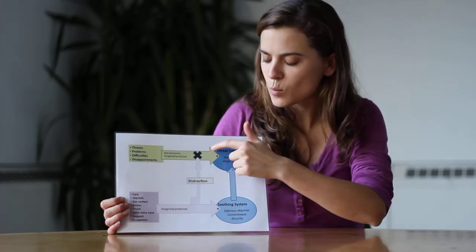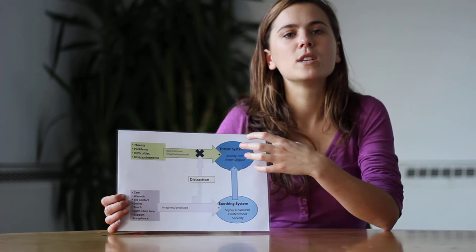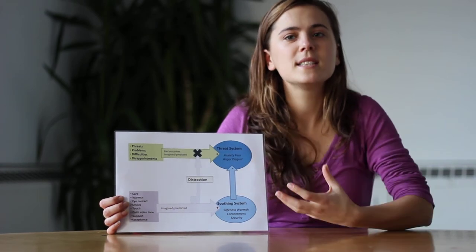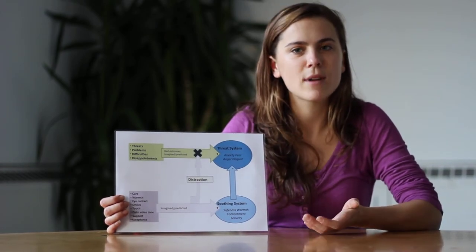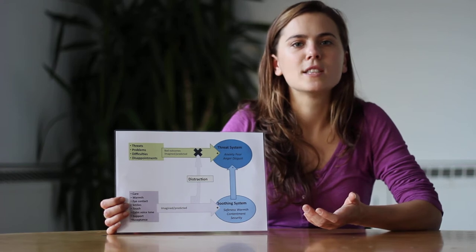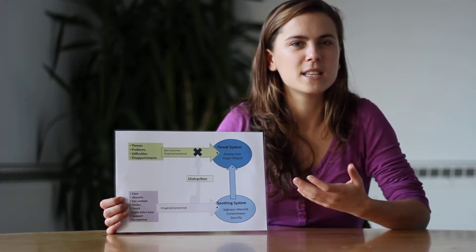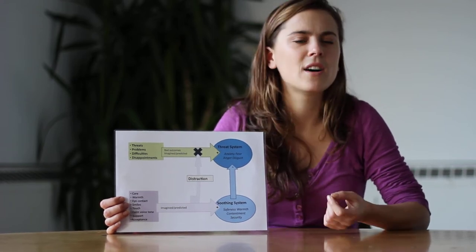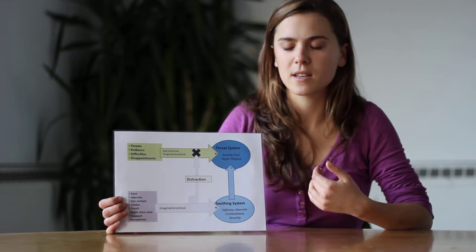So this is the brain, this is one tiny part of the brain which we're going to call the threat system. Now this system has evolved to detect threats in our environment and to respond appropriately to them with particular defensive emotions, so things like anxiety, anger, fear, disgust, this kind of thing.